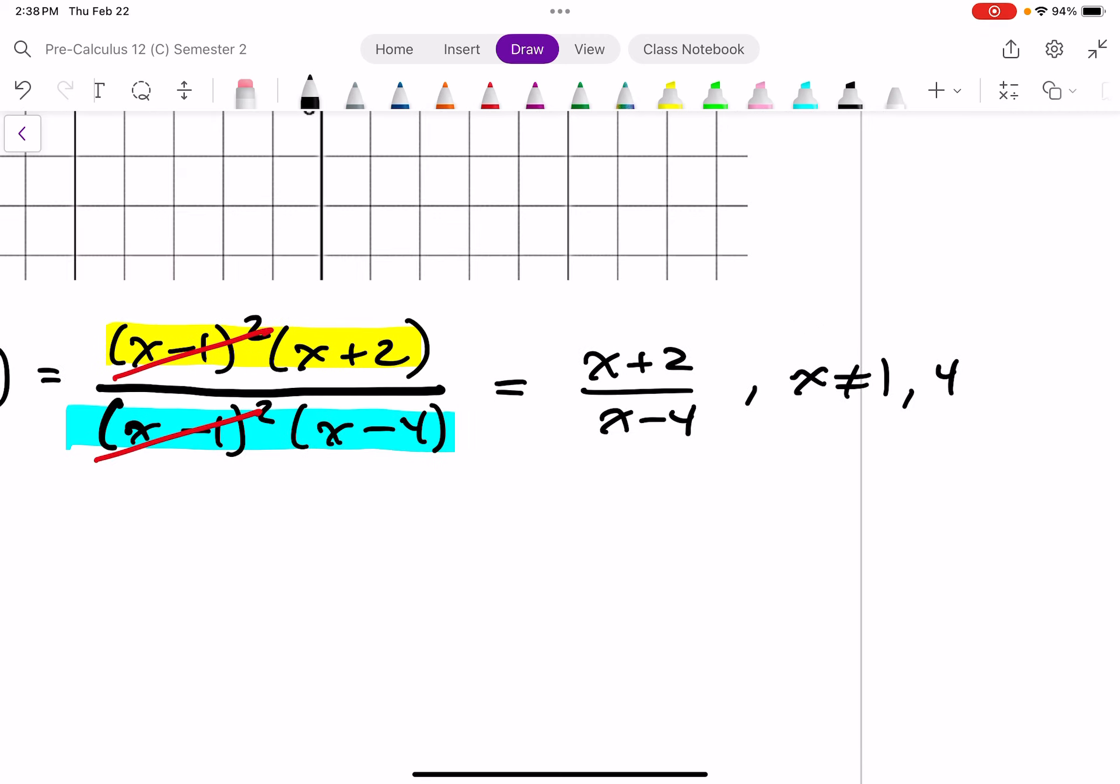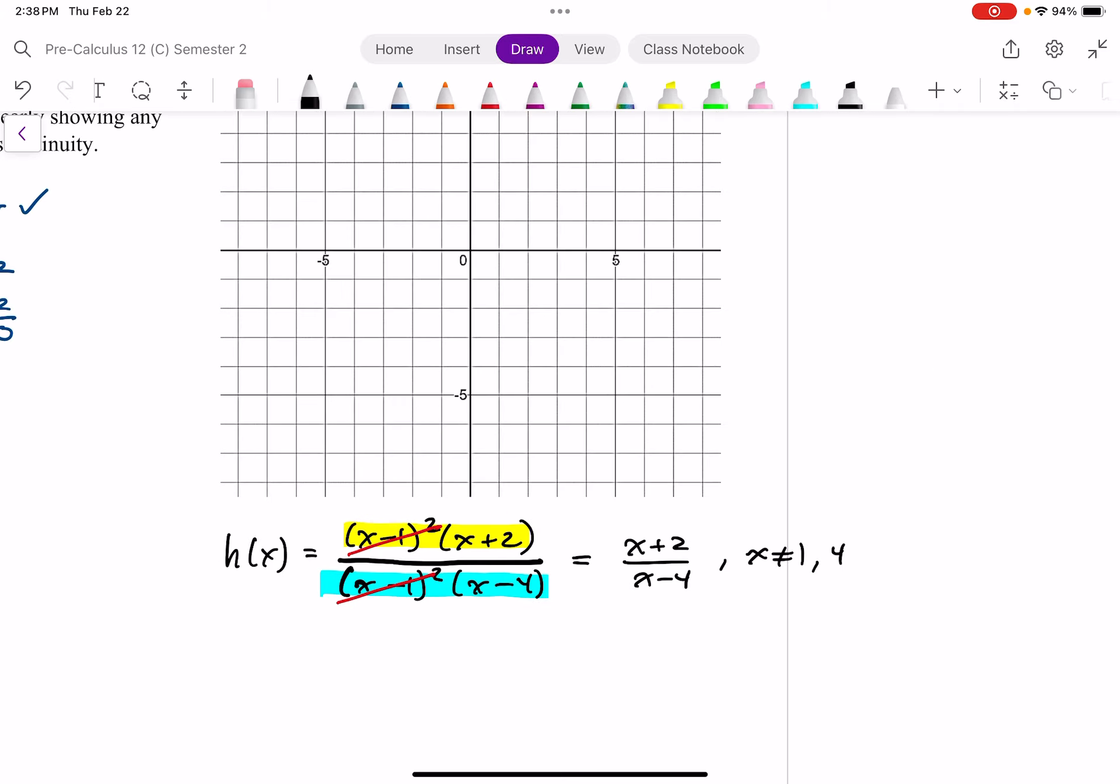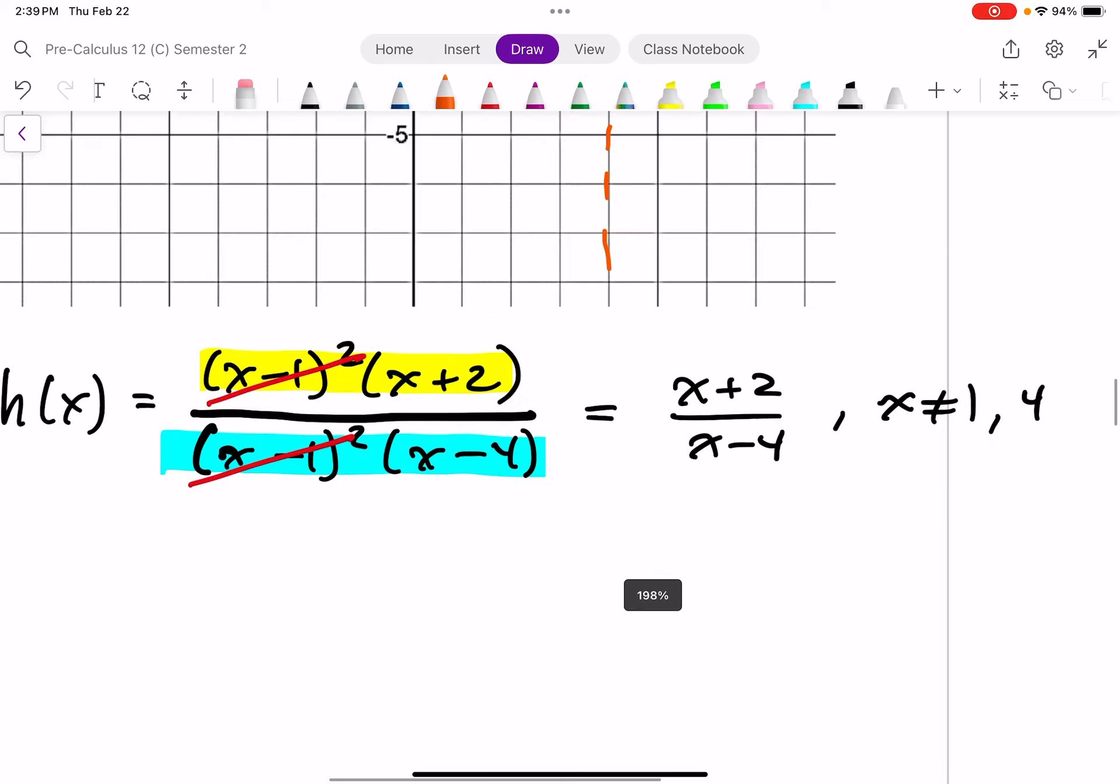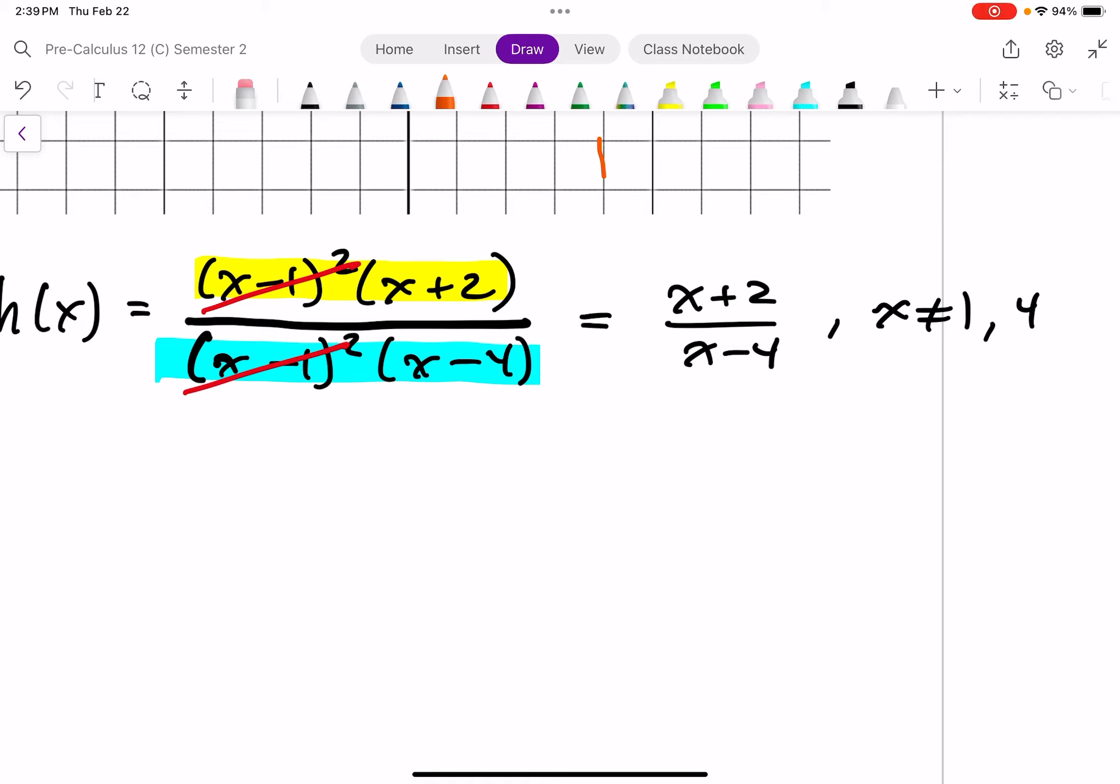All right. So now I have a much simpler function to try visualizing. So how do I graph x plus 2 over x minus 4? One thing I can tell right away is that there is a vertical asymptote at 4. If I really want to get more detail out of this, I need to put this into a different form. And I want to write this into our more standard form for a simple rational function like this.